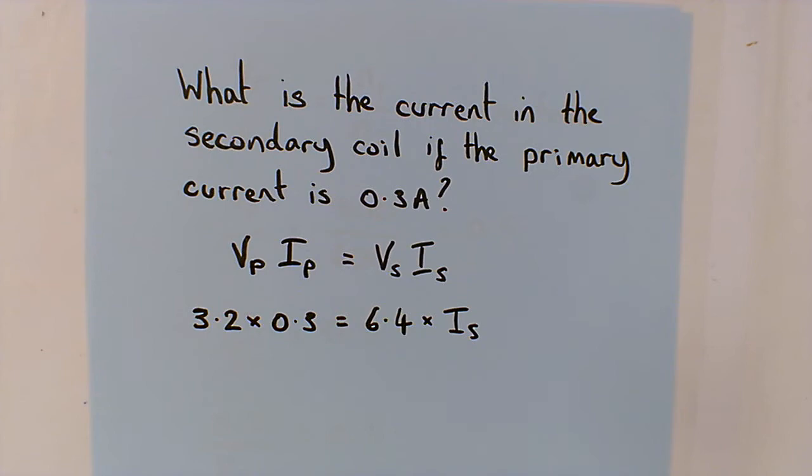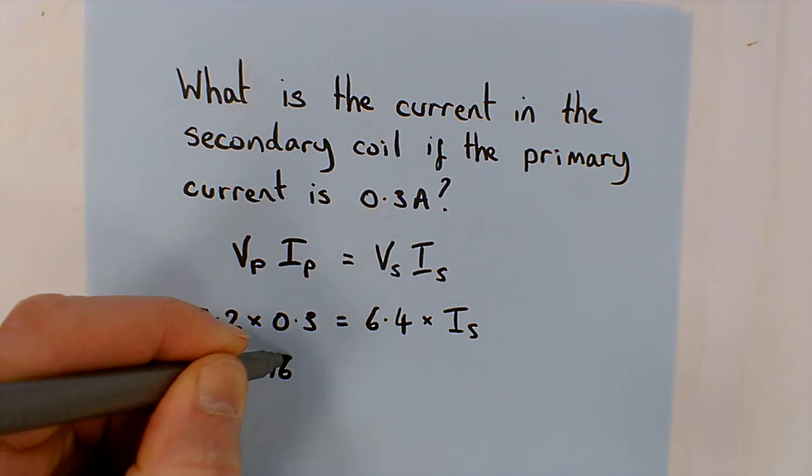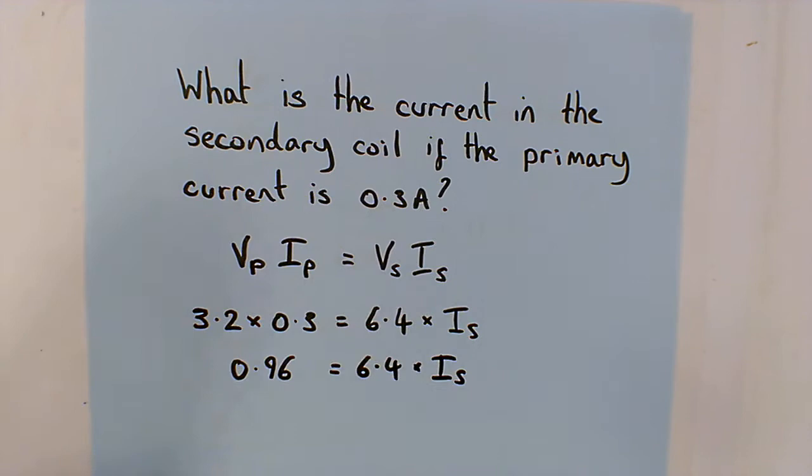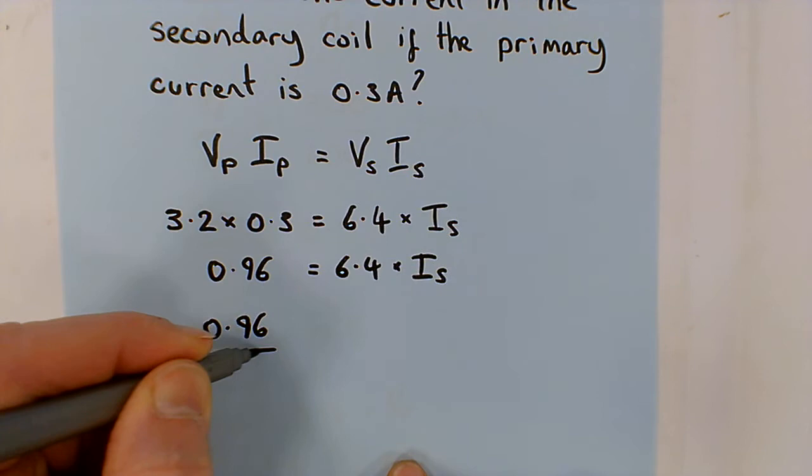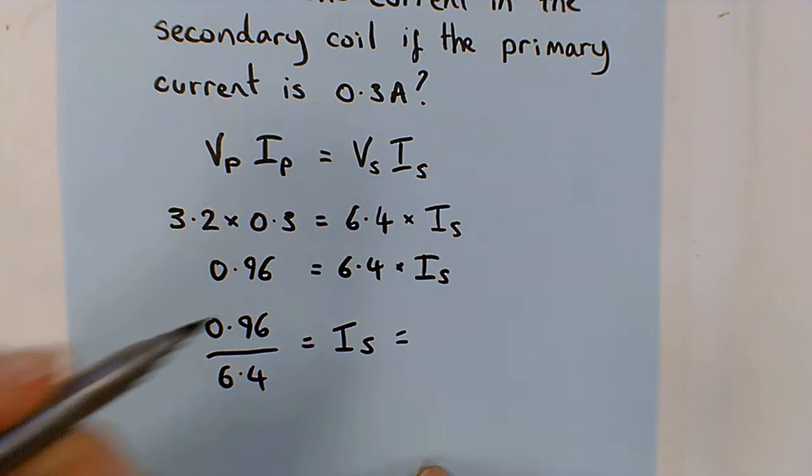So first of all we do a little bit of maths on this using our beloved calculators. And so if we put these in we see 3.2 times 0.3 and that gives us 0.96 equals 6.4 times IS. Therefore in order to calculate the current we need to divide 0.96 by 6.4 equals IS and that equals 0.15 amps.